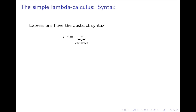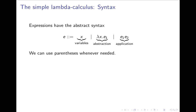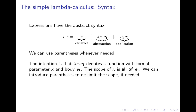Let's have a look at the syntax of the lambda calculus. It really is quite simple. In the lambda calculus, expressions have the abstract syntax where you have variables — we'll let x range over those — we have lambda abstraction, lambda x dot e1, and we have application. Those are really the only constructs we have in the lambda calculus. We can use parentheses whenever needed. The intention is that in an abstraction, lambda x dot e1, we think of the abstraction as a function: its formal parameter is x, its body is e, and the scope of x is all of e1.